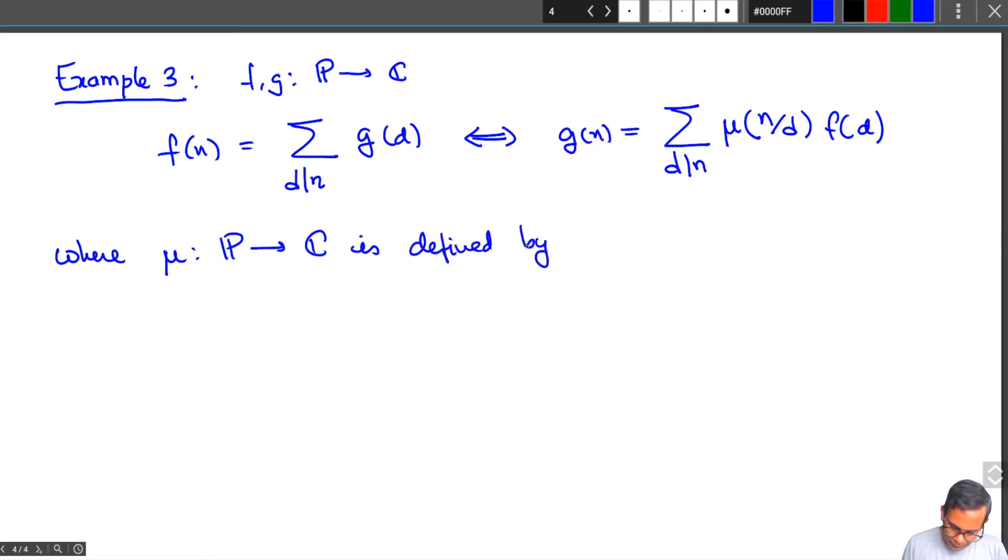The Möbius function μ is given as follows. You take the number n and you write down its prime factorization p₁^a₁ ... pₖ^aₖ. You know that every positive integer can be uniquely written as a product of prime powers, where these p₁, p₂, ..., pₖ are distinct primes and a₁, a₂, ..., aₖ are positive integers. For example, if you take n = 1 then all these a₁, a₂, ..., aₖ are zero. If you take n to be a prime then you have only one term and the corresponding a will be one.